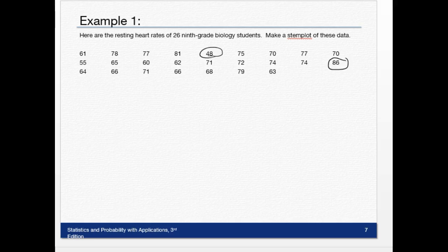That's going to help me know what my stems should be. I know I have to start with four and I need to go at least to eight—so four, five, six, seven, eight—and then I draw a vertical line. The first digit is the stem, and then the last digit is the leaf.